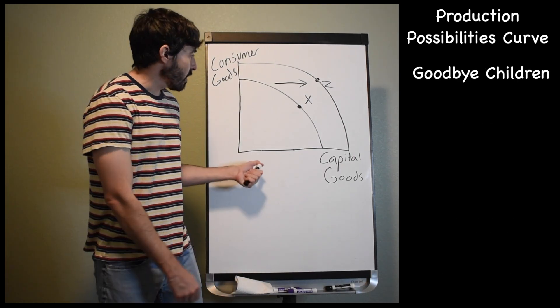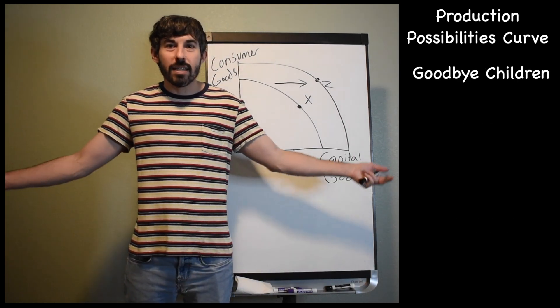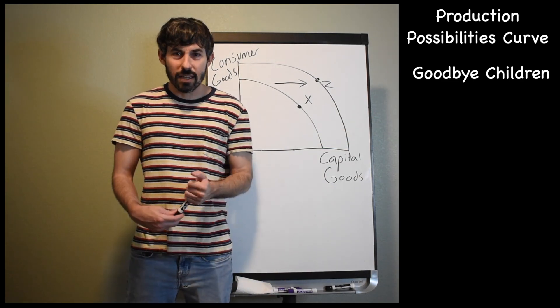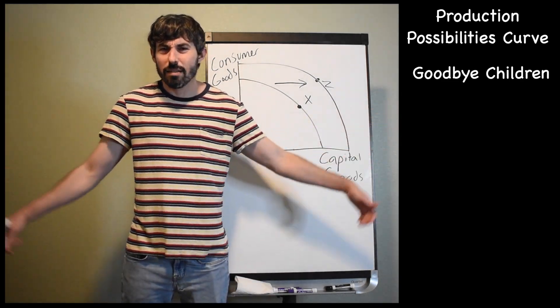All right, children. That was the production possibility curve. Join me again next time when we talk about something that I'm not sure what we're doing next time.